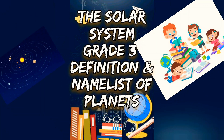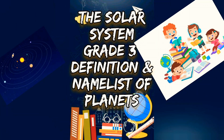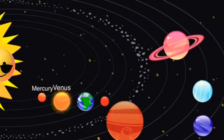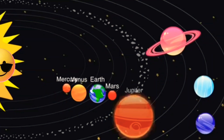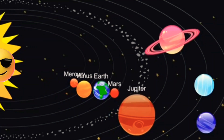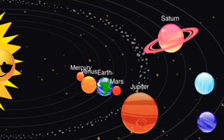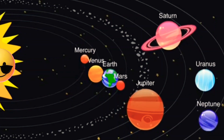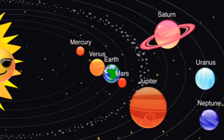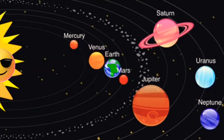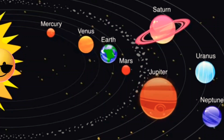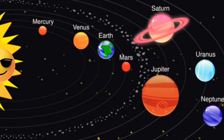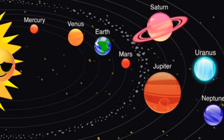Assalamu alaikum Grade 3, today we will name the planets. Mercury, Venus, Earth, Mars, Jupiter, Saturn, Uranus, Neptune. Mercury, Venus, Earth, Mars, Jupiter, Saturn, Uranus, Neptune.